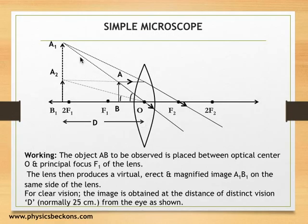Now for convenience and better visibility of the image, we try to get the image at the distance of distinct vision, which is about 25 centimeter from the normal eye. Now for comparison of angular size—angular size is the angle subtended by an object on the eye.